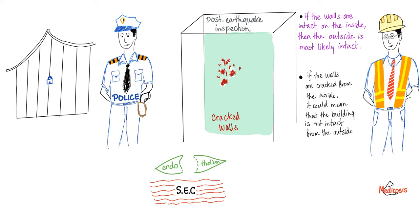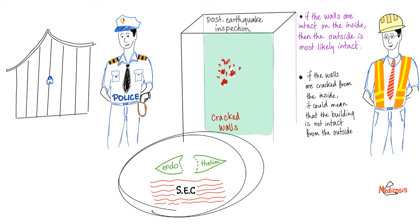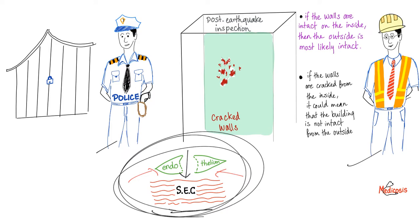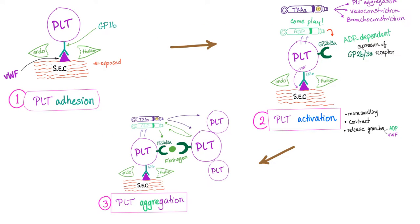Same thing with an engineer in a post-earthquake inspection — he's looking at the interior walls. If the walls are fine, probably not much damage has been done to the building. But if the walls are cracked and the subendothelial collagen is exposed, the earthquake was bad. So the platelets are activated when the subendothelial collagen is exposed, because it means the endothelium is damaged and there is trauma. Here is the process of primary hemostasis: we start with platelet adhesion, thanks to the GP1B receptor on the platelet and the von Willebrand factor on the subendothelial collagen.